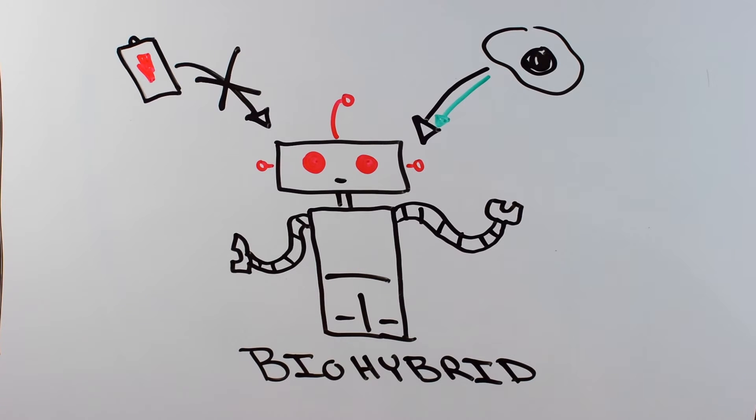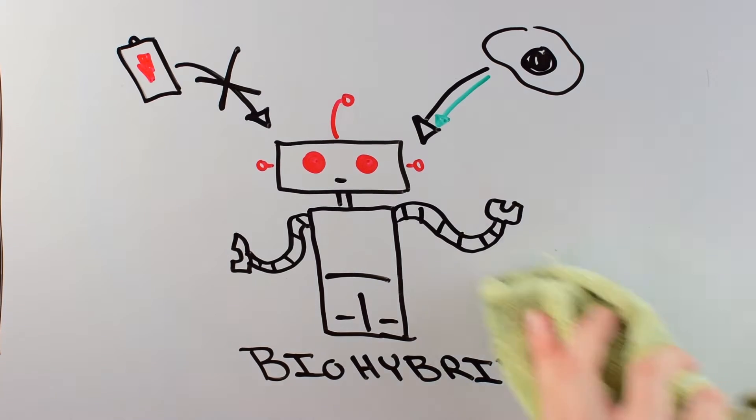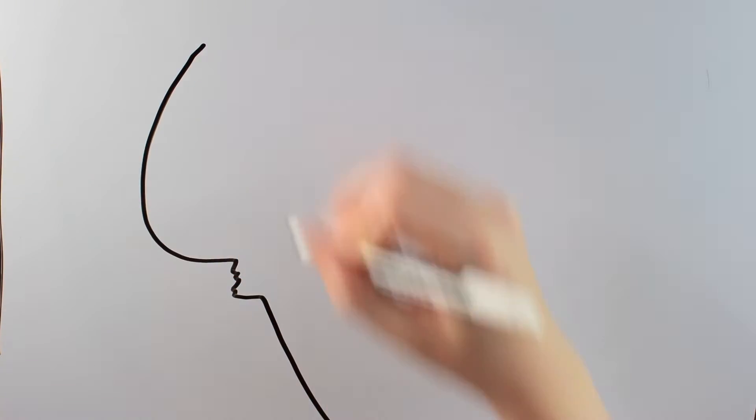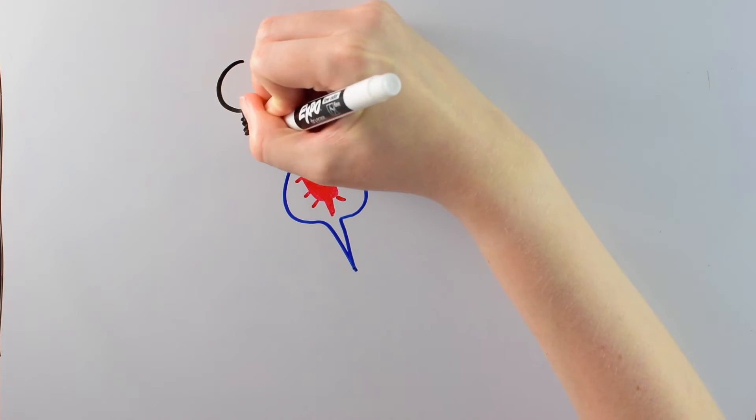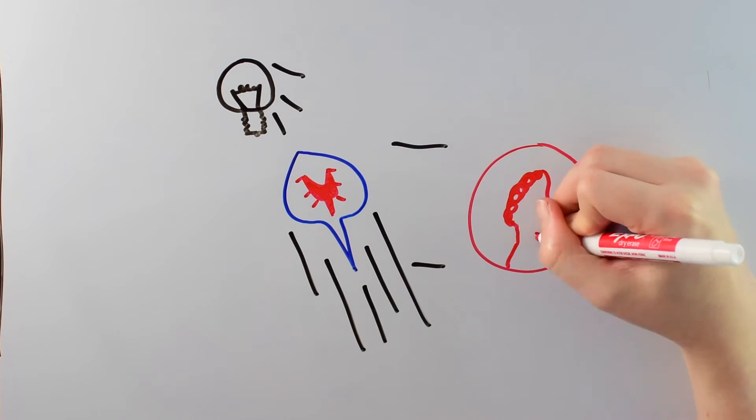So now we know that these researchers built a bio-hybrid soft robot. But what does it look like, and what does it do? The researchers wanted to mimic something that you find in real life, and so what they chose to mimic was a stingray. They wanted their robotic stingray to be able to recognize light and swim towards it, all while being about the size of a penny.